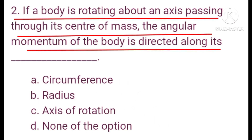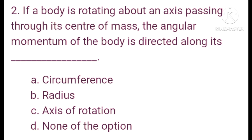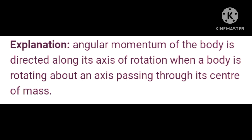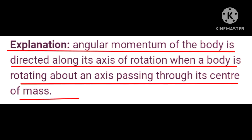Question number two: if a body is rotating about an axis that passes through its center of mass, the angular momentum of the body is directed along its axis of rotation. When a body rotates about an axis passing through its center of mass, the angular momentum is directed along that axis of rotation.